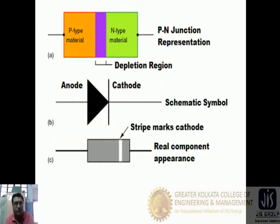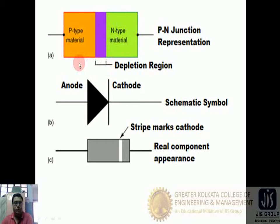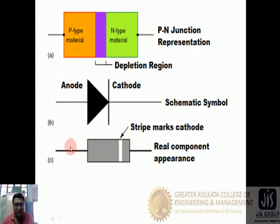Let us begin with the PN junction diode. The PN junction diode is formed with the combination of two types of material — one is P-type material and another is N-type material. The diode is a two-terminal device: one is cathode and the other is anode. The first picture is the block diagram representation, the second picture is the schematic symbol, and the third is the real component which is used in our experiments.